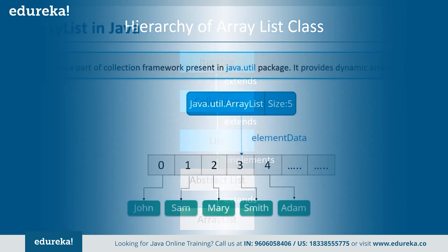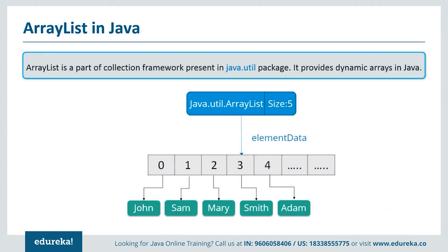Now let's see what ArrayList is. ArrayList is a part of the collection framework and is the implementation of the List interface, where elements can be dynamically added or removed from the list. Also, the size of the list is increased dynamically if elements are added beyond the initial size. Though it may be slower than standard arrays, it can be very helpful in programs where lots of manipulation of the array is required.